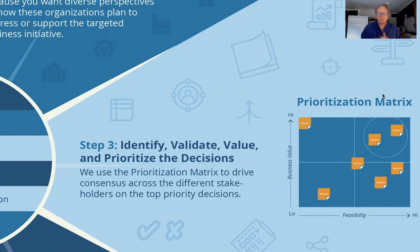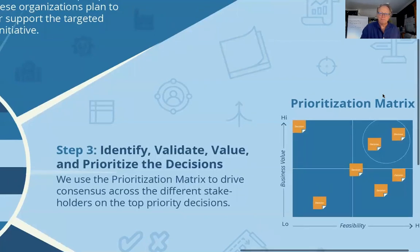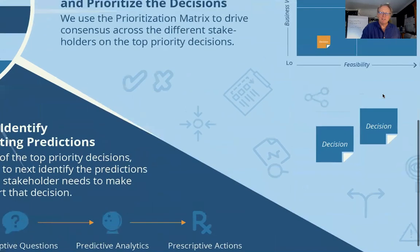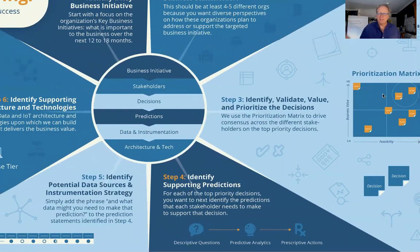Not only does the prioritization matrix help you identify, validate, value, and prioritize those use cases, but more importantly it ensures everyone in the organization who will be impacted has had a chance for their voice to be heard and to contribute to this roadmap of use cases you're going to go after. Next, once you've identified those use cases, everything else falls into place. Identifying the analytics or predictions you're trying to make becomes clear — you can work with key stakeholders to identify the predictions they're trying to make and how to create prescriptive analytics to help address those predictions.